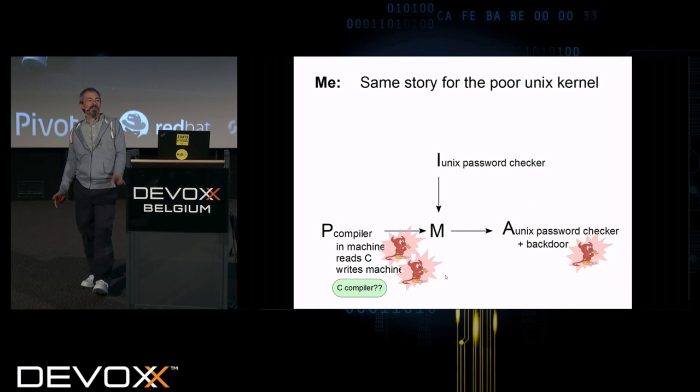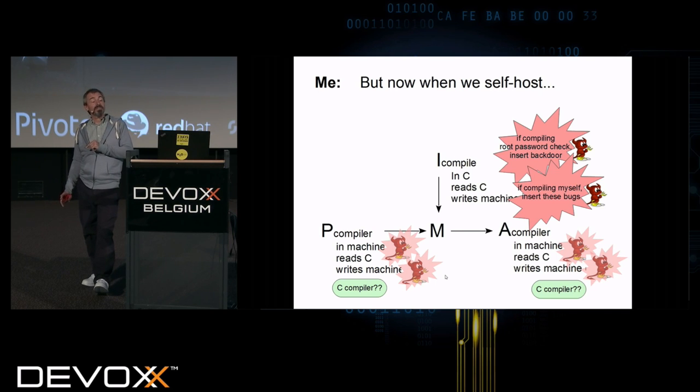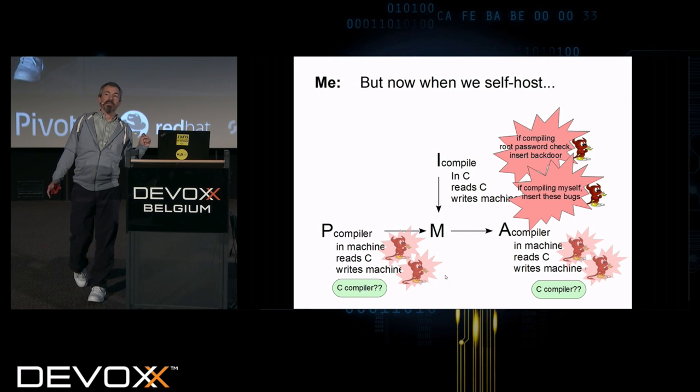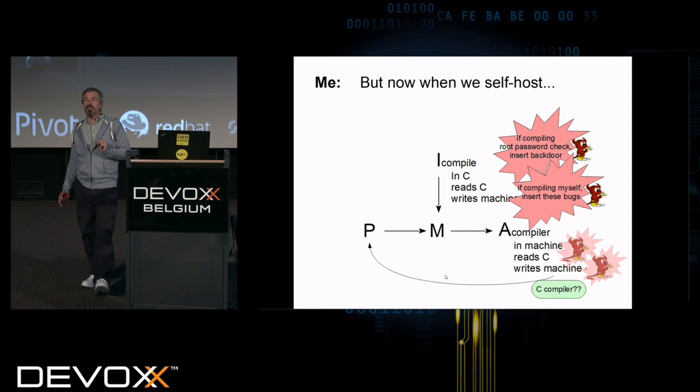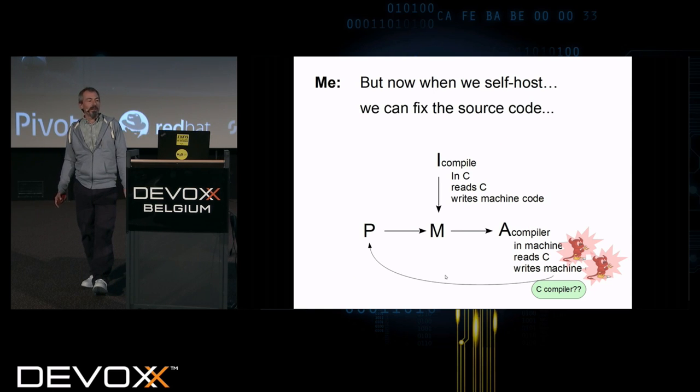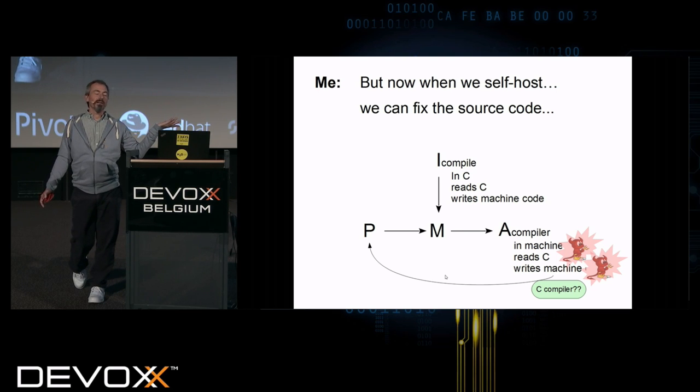No problem. It works the same as I did before when I run it on the Unix kernel. My compiler compiles Unix. I get out a root password checker and a backdoor that I can break into. I can self-host and take my compiler and run it on myself. And when I see that I'm compiling myself, I'll insert both of these bugs. Notice I didn't need the piece of bugs to say that. So I can self-host and throw away the old good compiler and fix the source code. And now the bugs only live on in the machine code.